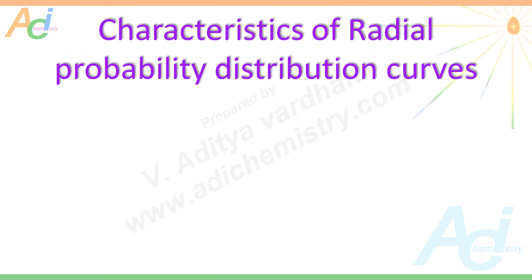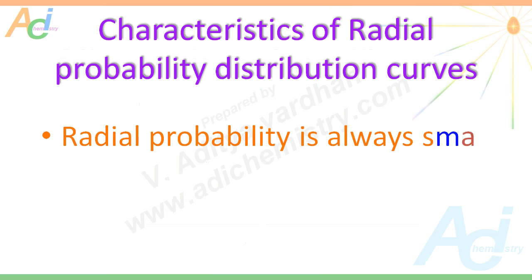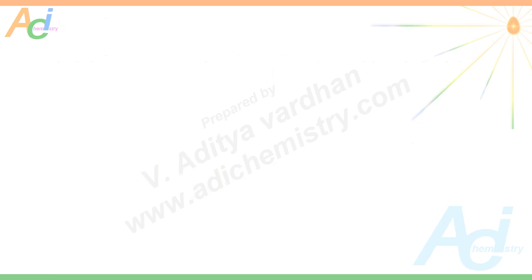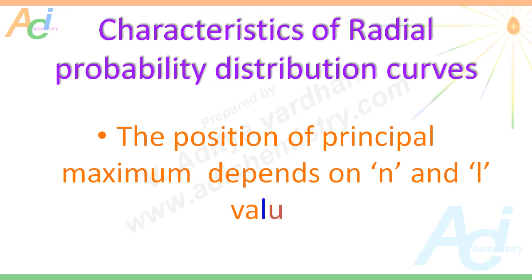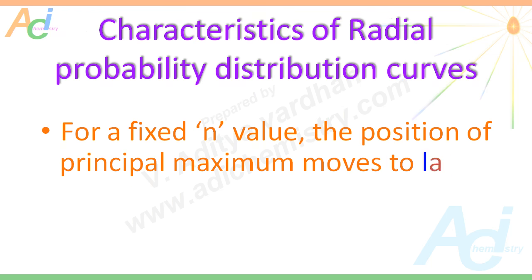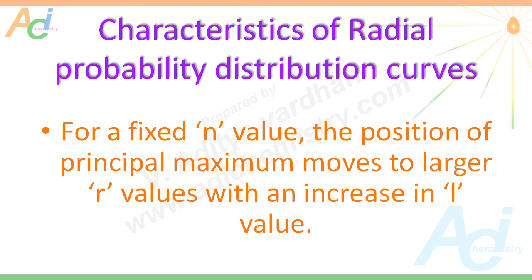Now let us summarize the important points about Radial Probability Distribution Curves. The Radial Probability is always small near the nucleus. The position of the principal maximum depends on the n and l values, where the principal maximum is the largest peak, and n and l are the principal and azimuthal quantum numbers. In general, for a fixed n value, the position of the principal maximum moves to larger r values with an increase in l value, though this is not always followed.